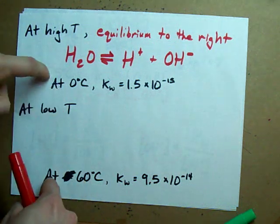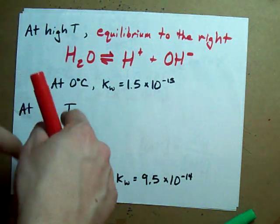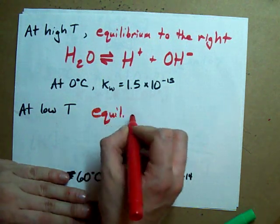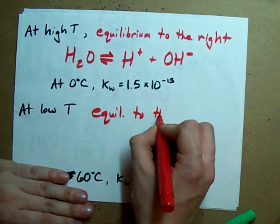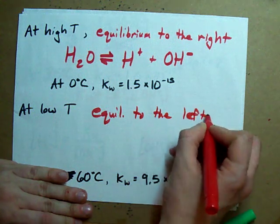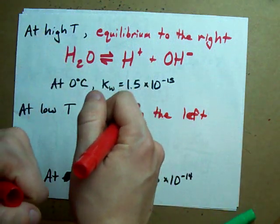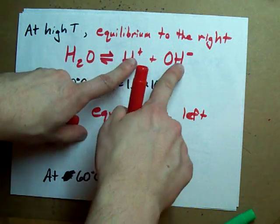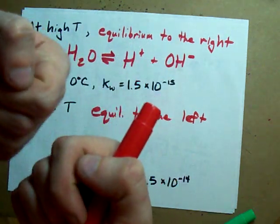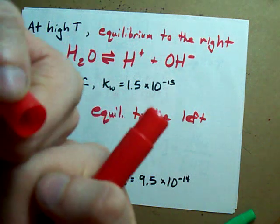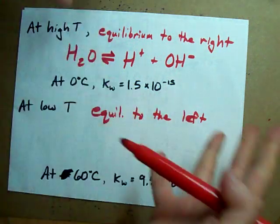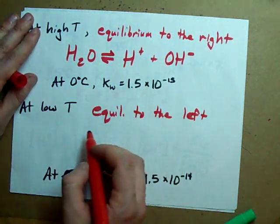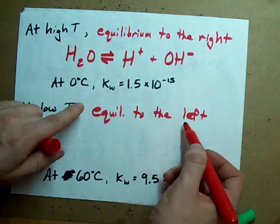At low temperature, the equilibrium is actually shifted to the left because the molecules are moving a little more slowly. And so the positive and negative ions have more of a chance to get back together without two waters breaking up and reforming them. In this case, Kw is lower. See?